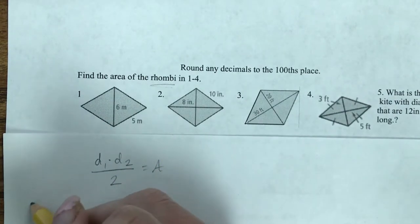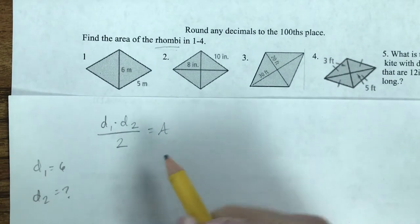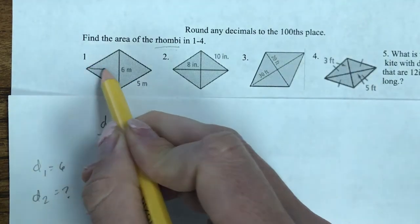I can already see that diagonal 1 is 6, but diagonal 2, I don't know what it is. So I'm going to have to go through and do a little bit of work. I can draw in the second diagonal.